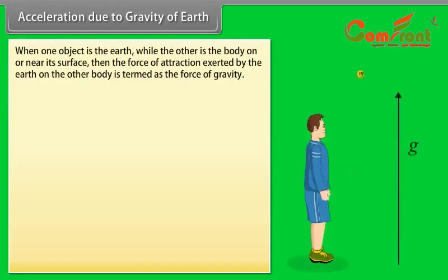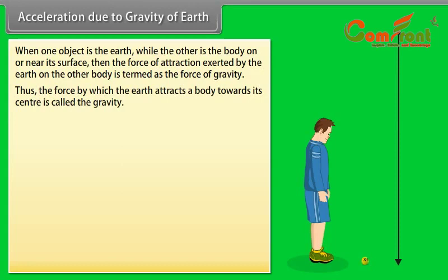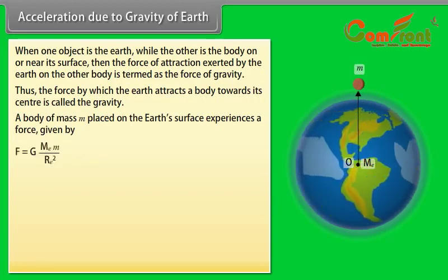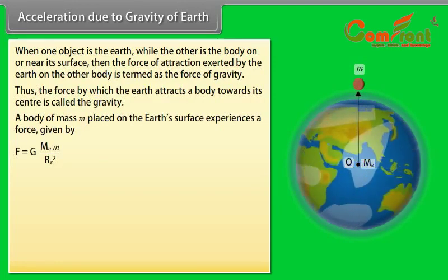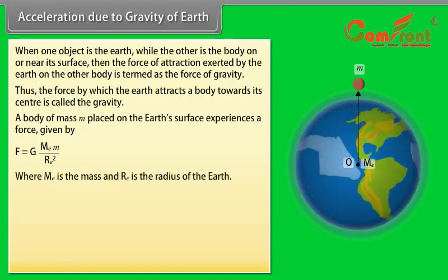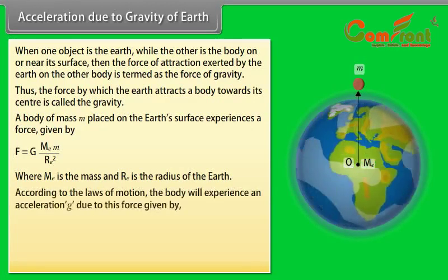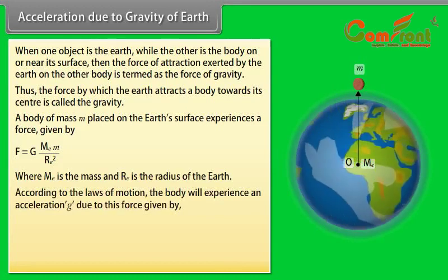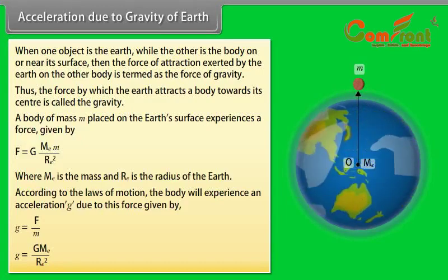Acceleration due to gravity of earth. When one object is the earth while the other is the body on or near its surface, then the force of attraction exerted by the earth on the other body is termed as the force of gravity. Thus, the force by which the earth attracts a body towards its center is called the gravity. A body of mass M placed on the earth's surface experiences a force given by F is equal to G into ME M upon RE square, where M is the mass and RE is the radius of the earth. According to the laws of motion, the body will experience an acceleration g due to this force given by g is equal to G into ME divided by RE square.